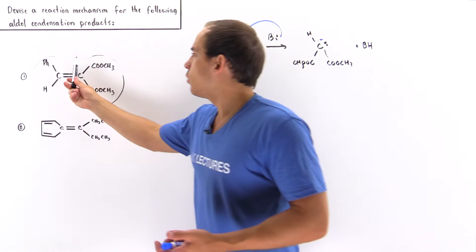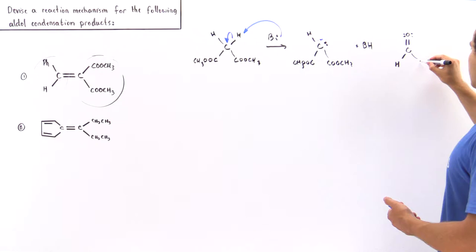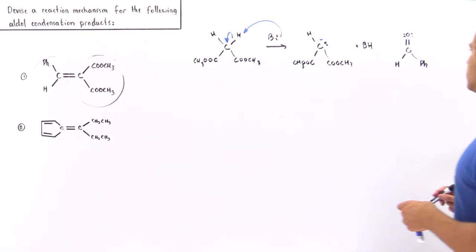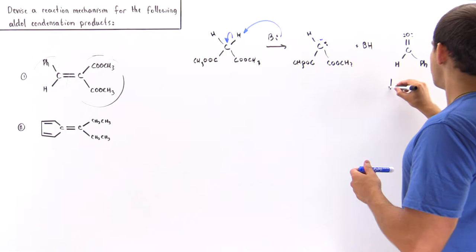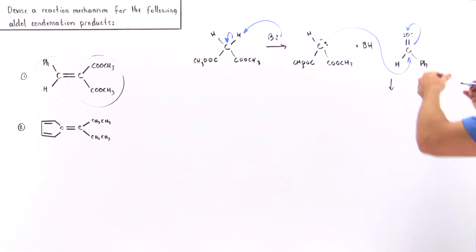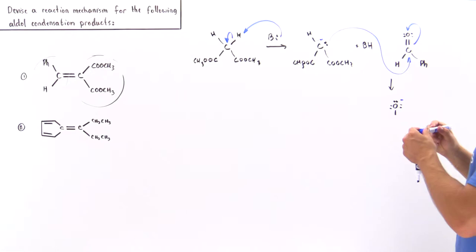In the next step, we add our simple aldehyde — a carbon double-bonded to oxygen, with H on one side and a phenyl group on the other. This is a benzaldehyde, and the reaction mechanism is exactly like the Knoevenagel condensation. In step two, the lone pair of electrons on our carbanion acts as a nucleophile, attacking the carbonyl carbon, displacing the pi bond and placing the two electrons onto the oxygen. We now have a negative charge on the oxygen.